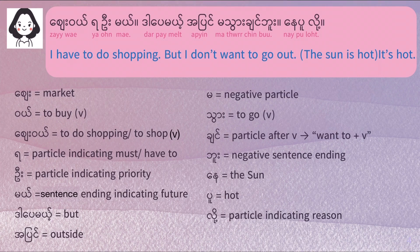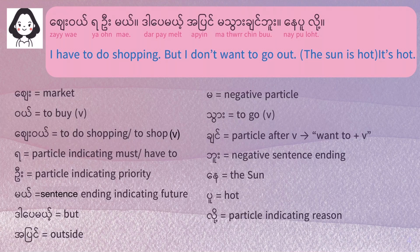Then there is another particle which is 'O.' We write it as O, but in this context and with this meaning, it is pronounced as 'O.' 'See way ya o me' — this 'O' is a particle that indicates priority. So 'ze way ya o me' and 'ze way ya me' mean basically the same, but 'ze way ya o me' suggests a slight hint of priority. That's why she said 'ze way ya o me.'